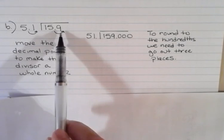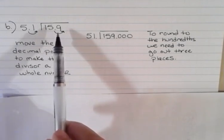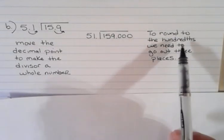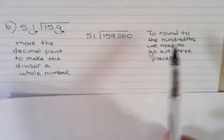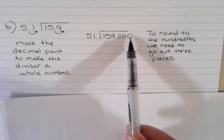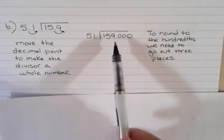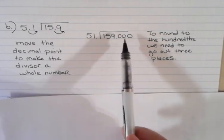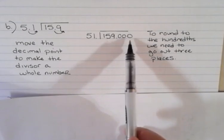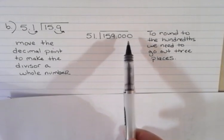I'm asked to round to the hundredths. We need to go out three places so that we can round back to the second place, which is the hundredths. That's why I put three trailing zeros on there to begin with.